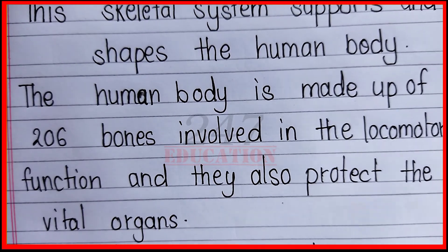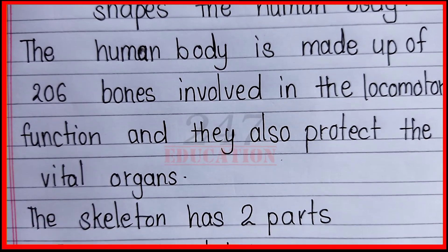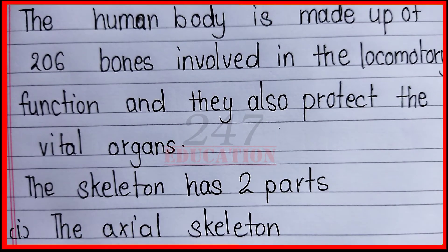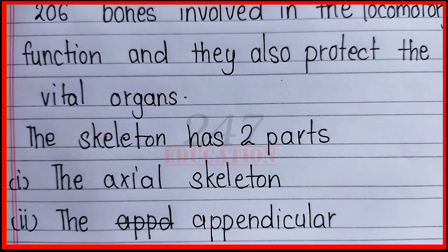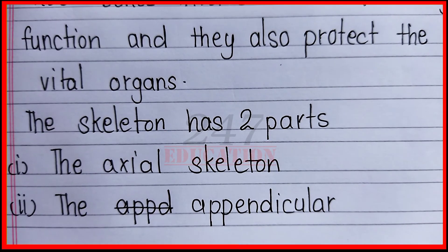This skeletal system supports the human body. The human body is made up of 206 bones involved in the locomotory function and protecting the vital organs. The skeleton has two parts: the axial skeleton and the appendicular skeleton. Thank you.